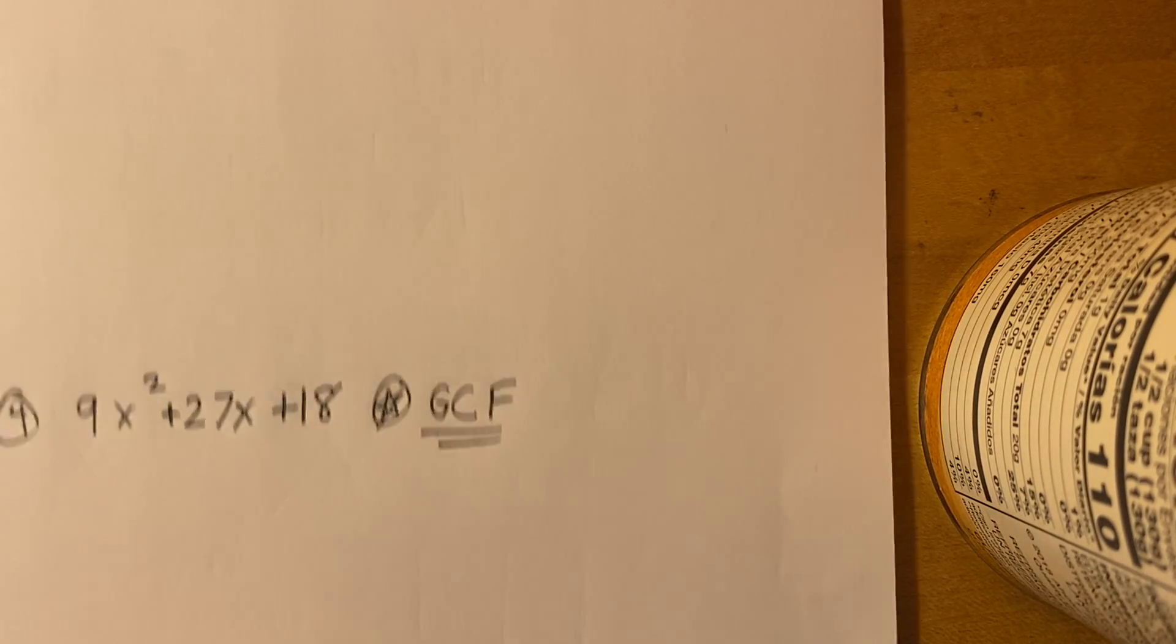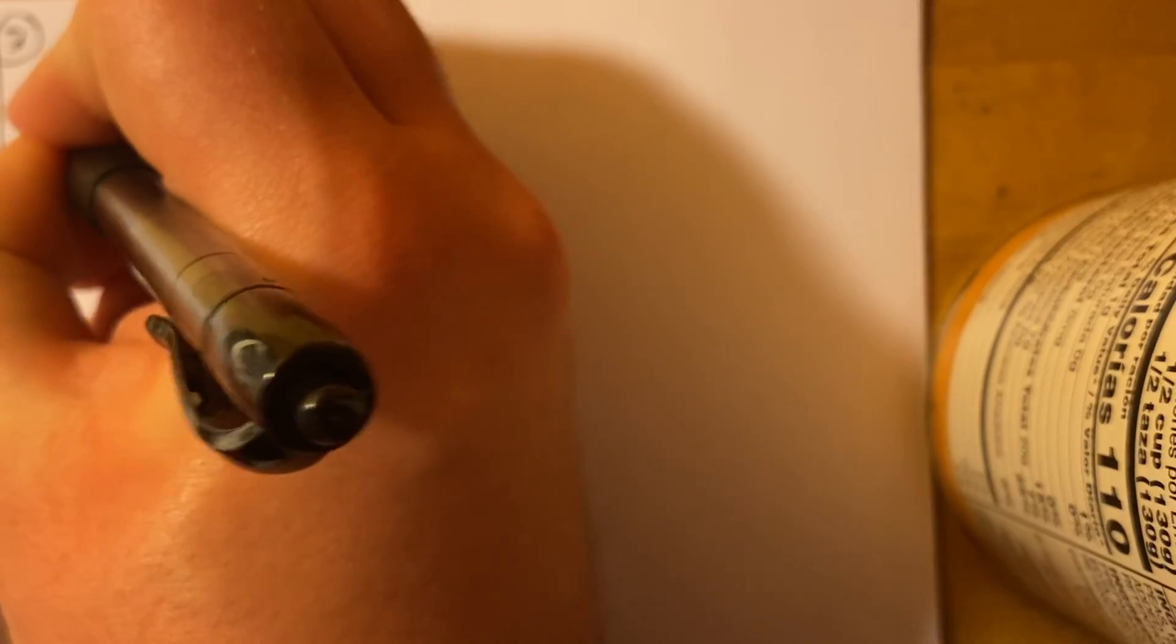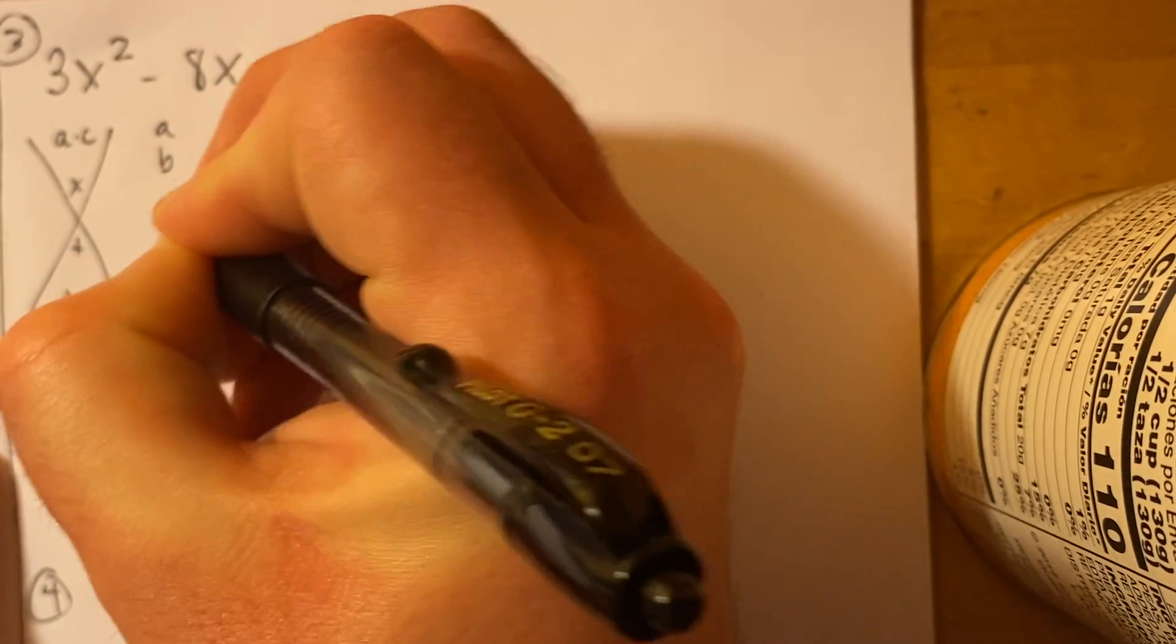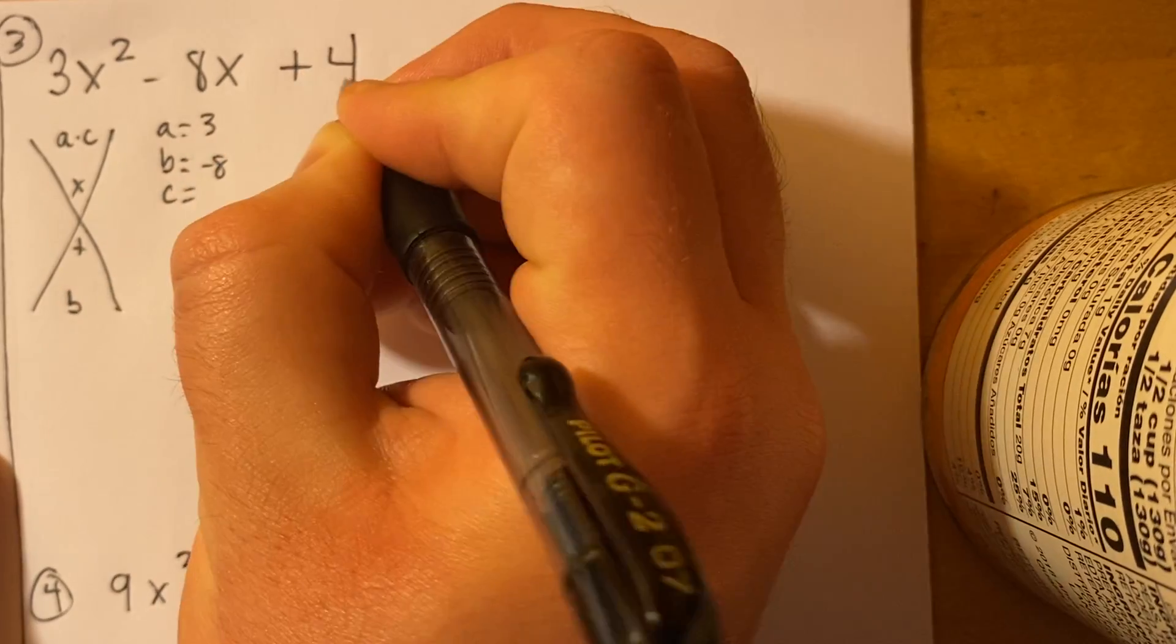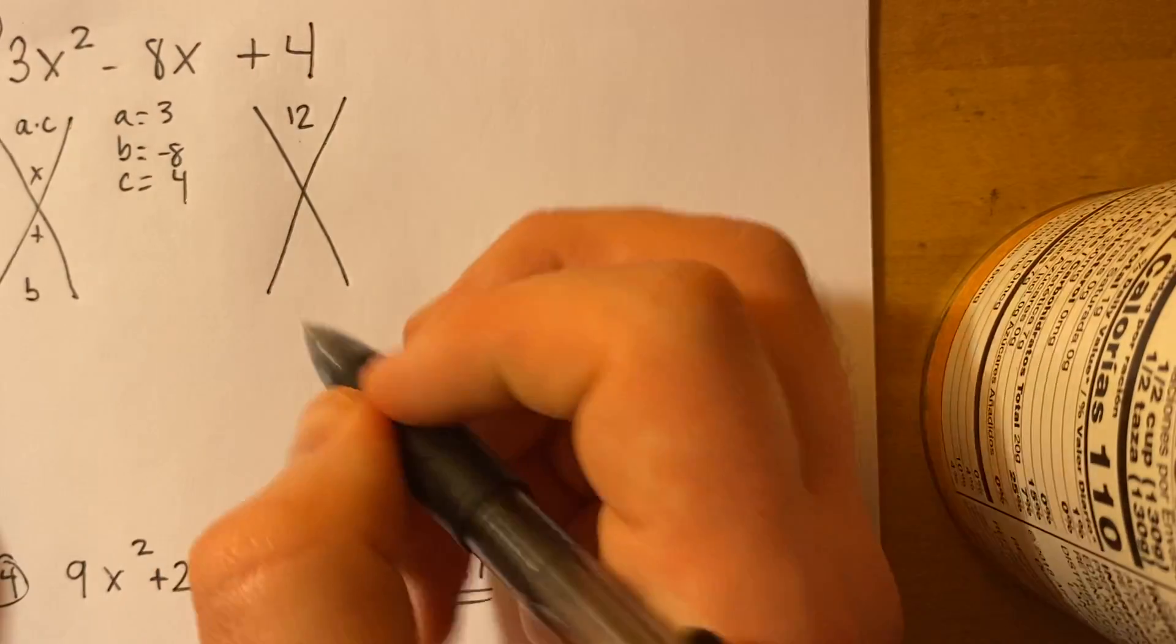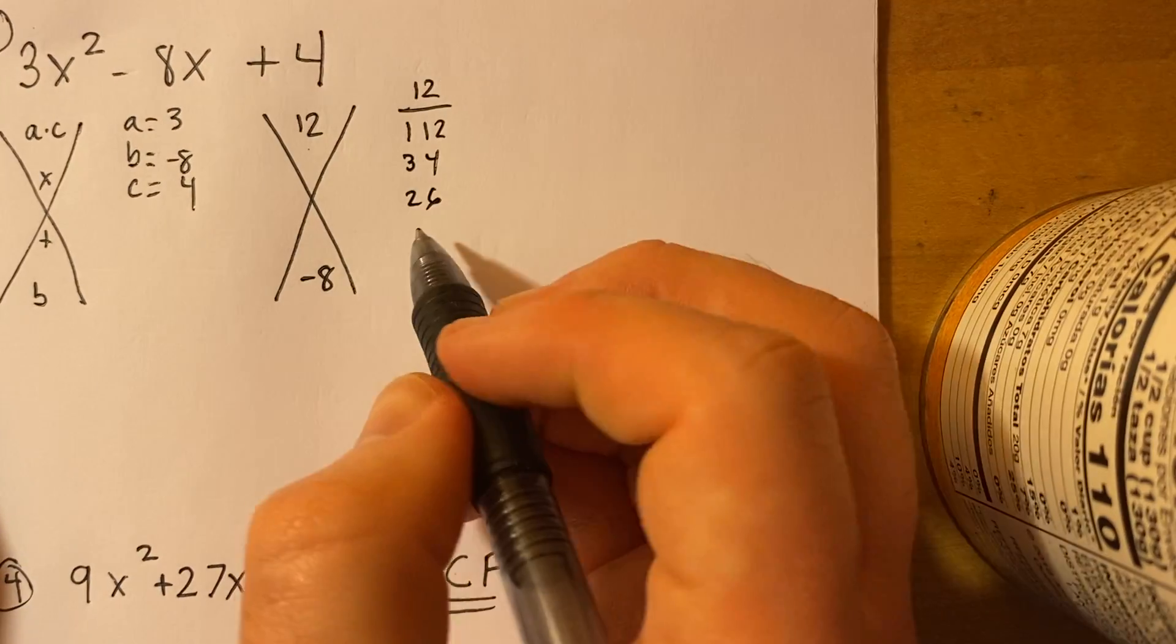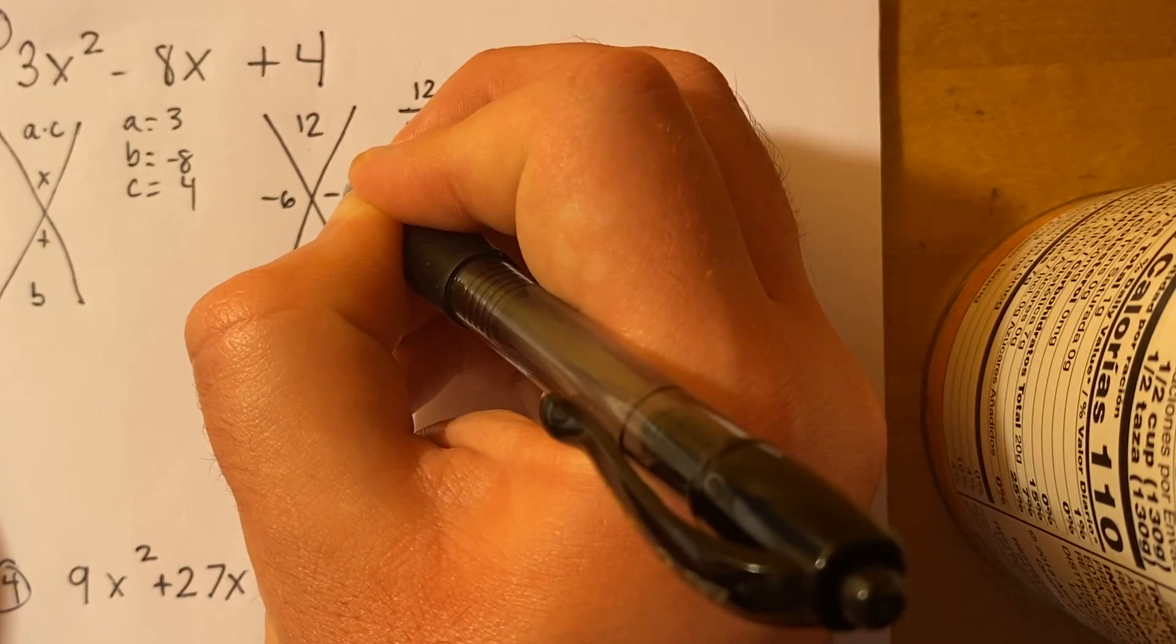Next one we have is 3x² - 8x + 4. So again, I do my X. Remember, just a quick review, a times c at the top, b at the bottom. We're looking for what multiplies to this and we're looking for what adds up to b. So our a here is 3, our b is going to be negative 8 and then our c is 4. So I'll go ahead and make my X again. a times c, 3 times 4 is 12, and then our b is going to be negative 8. So then I'm going to list my little factors of 12: 1 and 12, 3 and 4, 2 and 6. I see this 2 and 6 could work if it was negative 2 and negative 6. So I'll go ahead and do that, negative 6 and negative 2.